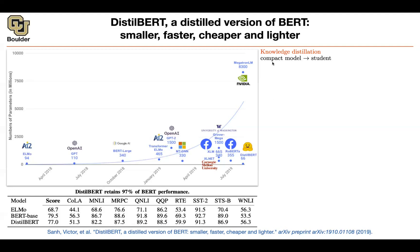What is the framework? You have a compact model — the student, in this case DistilBERT, which has maybe half the depth or half the hidden dimension. You have a larger model — the teacher, in this case BERT. The distillation loss works as follows: the teacher looks at a sentence and outputs some probability scores. These probabilities are your T_i. The student outputs its own distribution S_i. The student is outputting one distribution, the teacher is outputting another on the same data, and you want them to be as close as possible. You take the cross-entropy between the two distributions and try to match them.